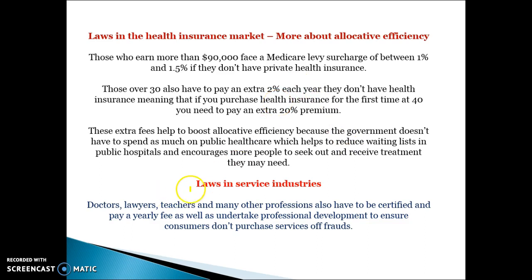In the service industries, professions need to be certified — teachers, lawyers, and doctors all need to be registered. Teachers, for example, have to have their VIT, which means they're constantly checked to make sure they don't have a criminal record, their documents are up to date, and they still have the right to work with children, so everyone in the profession is professional and less likely to be deceiving students.